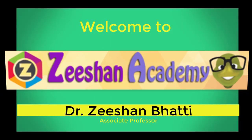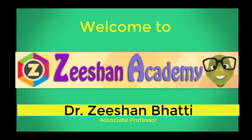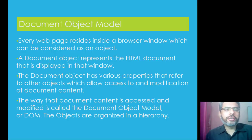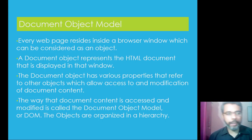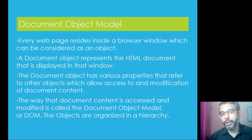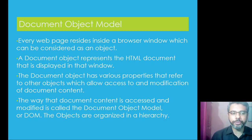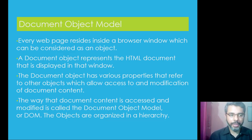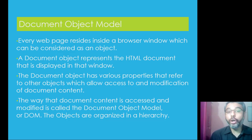Every web page resides inside a web browser, which can be considered as an object. A document object represents the HTML document that is displayed in that particular window. A document object has various properties that refer to other objects, allowing access to and modification of that content. The way that document content is accessed and modified is called the Document Object Model, or DOM.